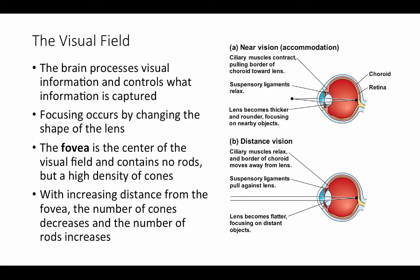With increasing distance from the fovea, the number of cones decreases and the number of rods increases. You may have heard that when looking at the night sky, if you want to see a dim star or planet it's actually better to focus your eyes a little distance away from it — that way you're using the rod-rich peripheral retina that is more sensitive to dim light. You won't be able to see it at all if you're focusing it on your fovea.